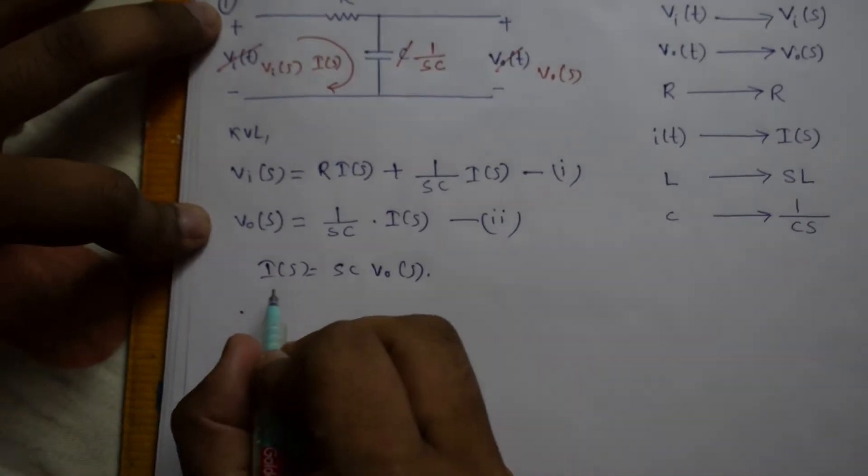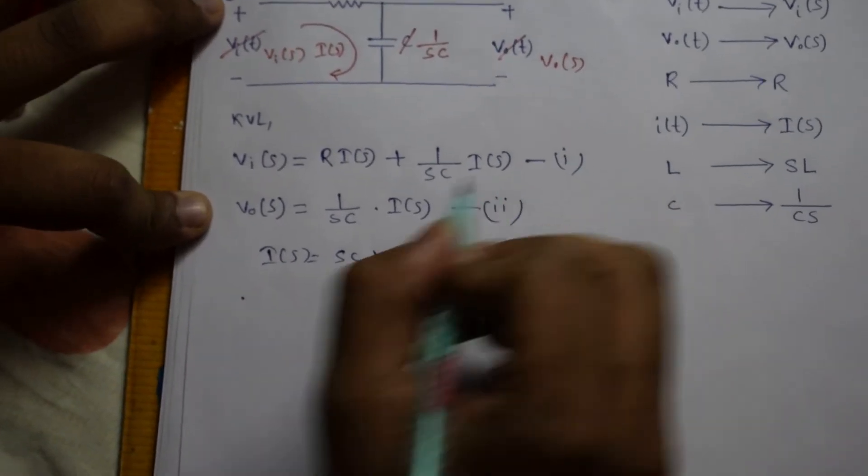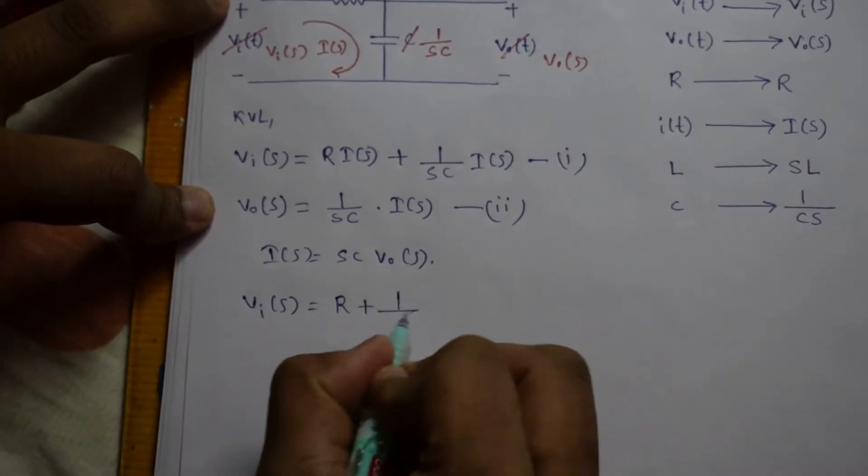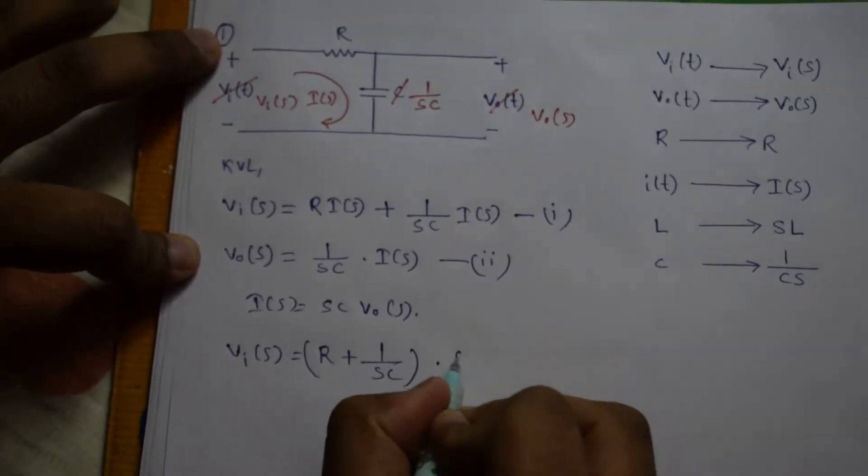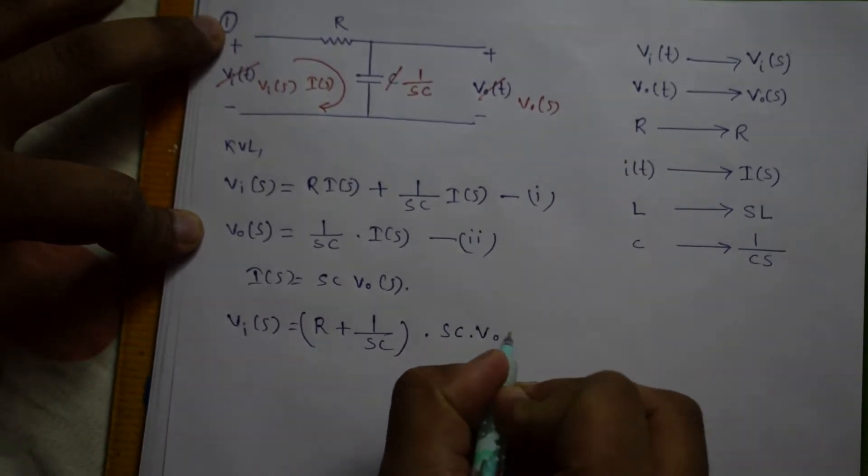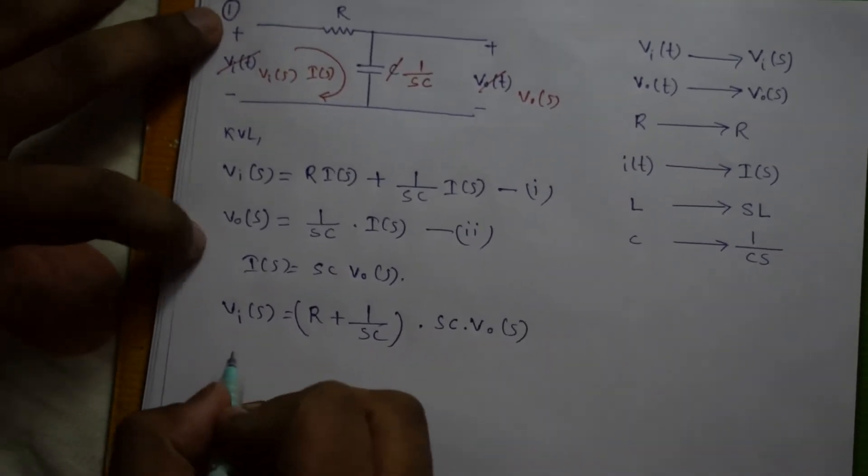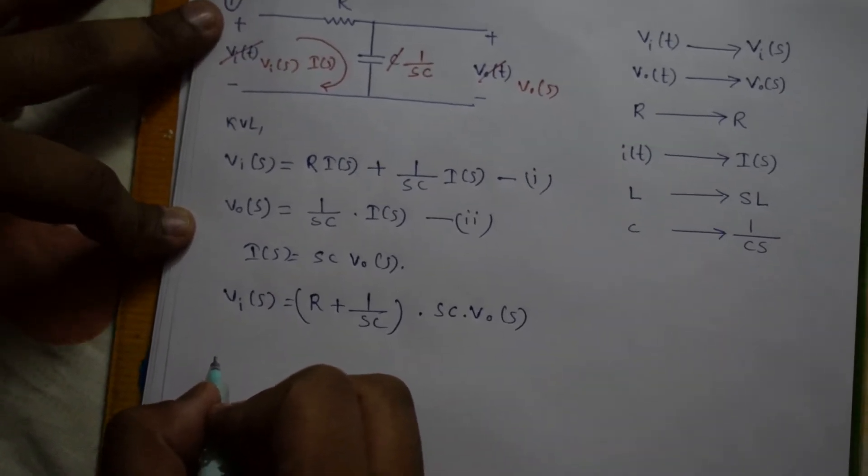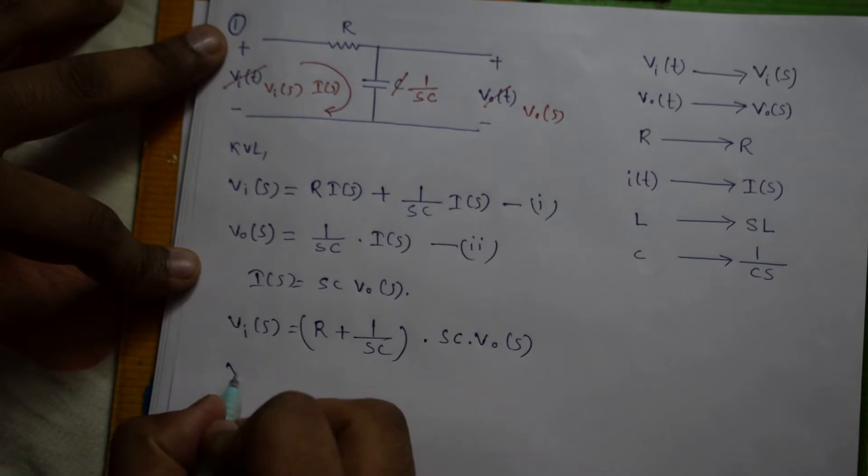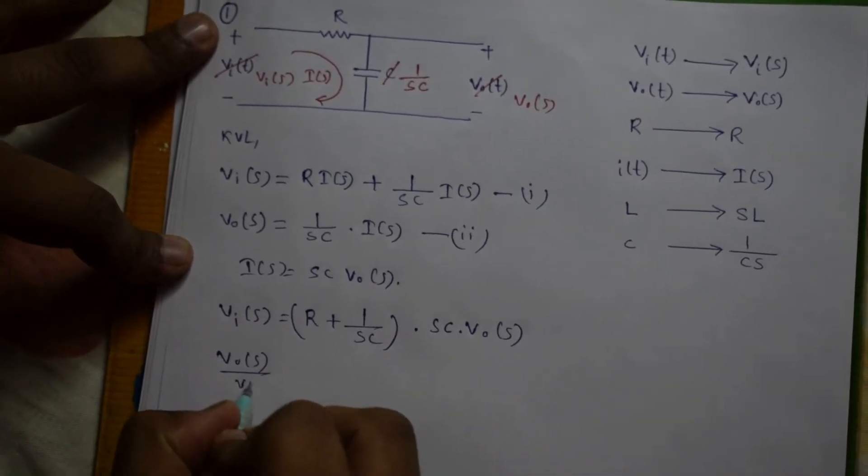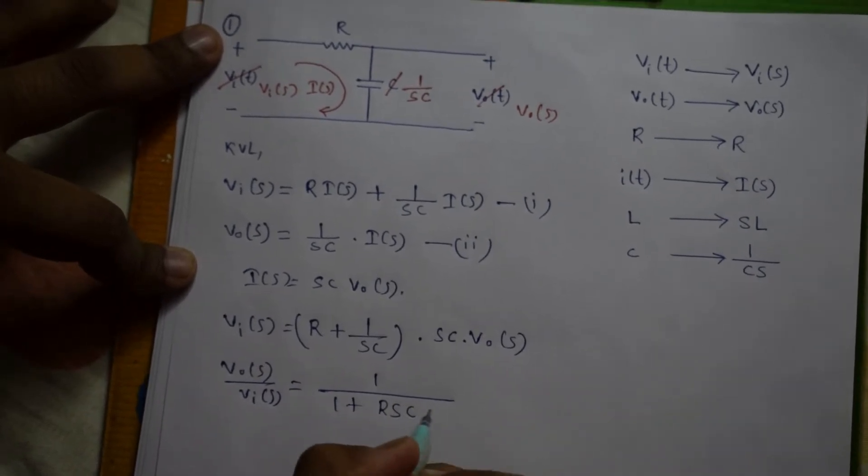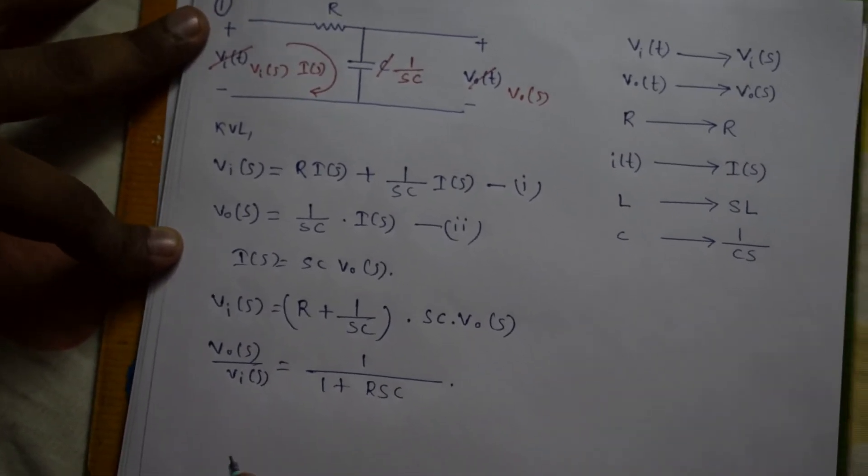Putting the value of I(S) in equation 1, we will get Vi(S) equals to R plus 1 by SC into SC into Vo(S). So what do we need for a transfer function? We need Vo(S) by Vi(S), so Vo(S) by Vi(S) equals to 1 by 1 plus RSC. We got our required transfer function.